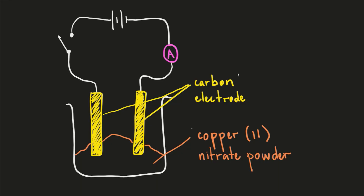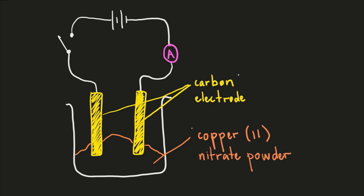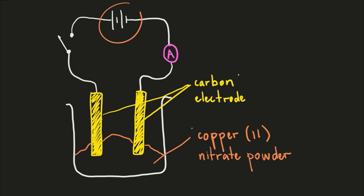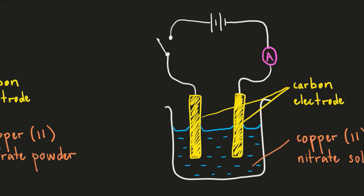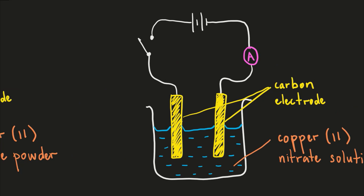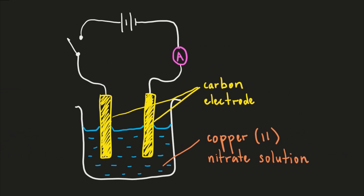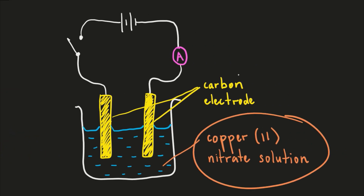This is how the experiment would be set up. You would need to use carbon electrodes which are dipped into the chemical that we want to test. Here we are using copper 2 nitrate powder first — copper 2 nitrate is the ionic compound. We have connecting wires to a switch, connected to the power source which is dry cells, and we also have an ammeter to measure if there is current or not. We then add water to form copper 2 nitrate solution.